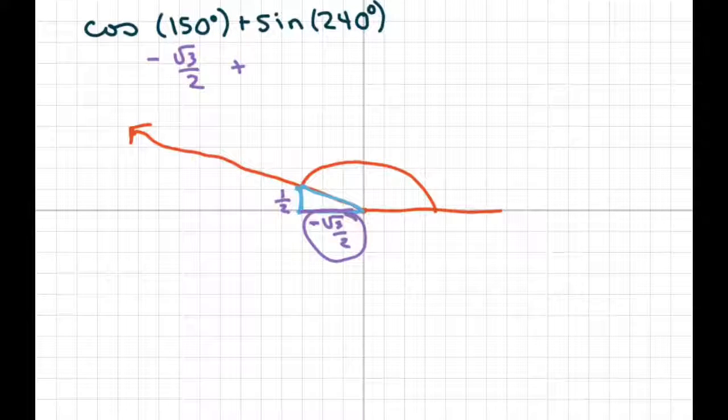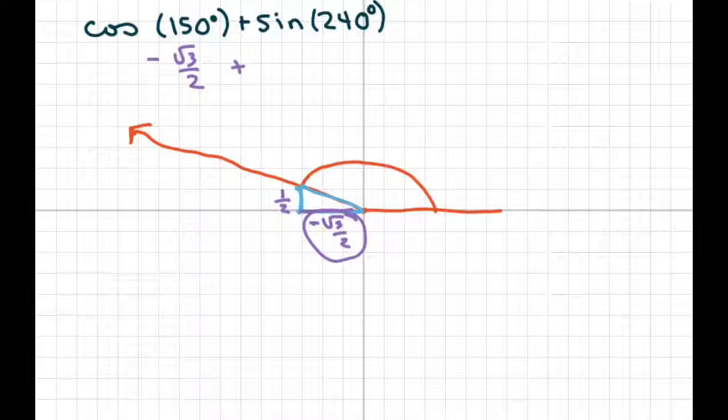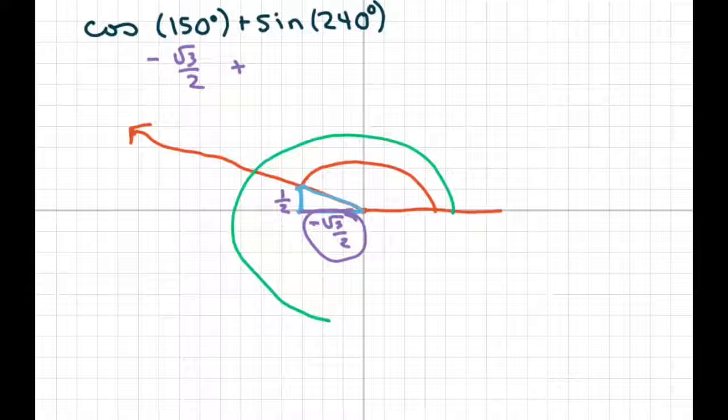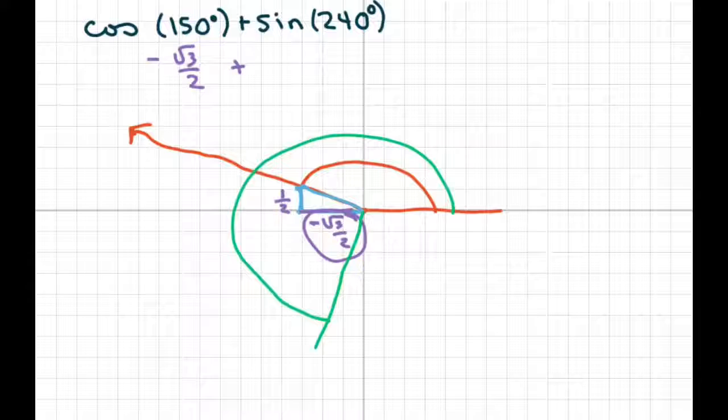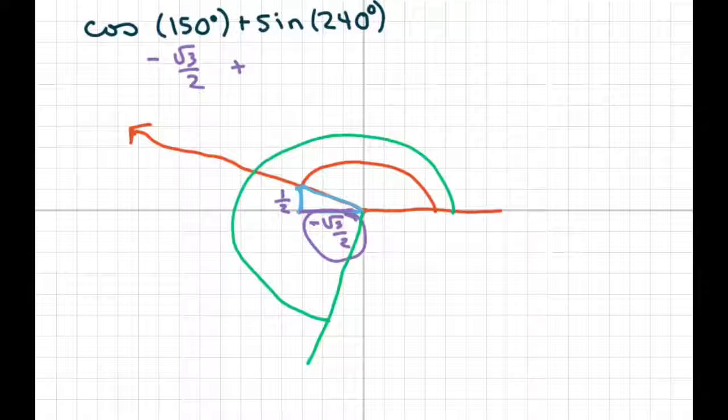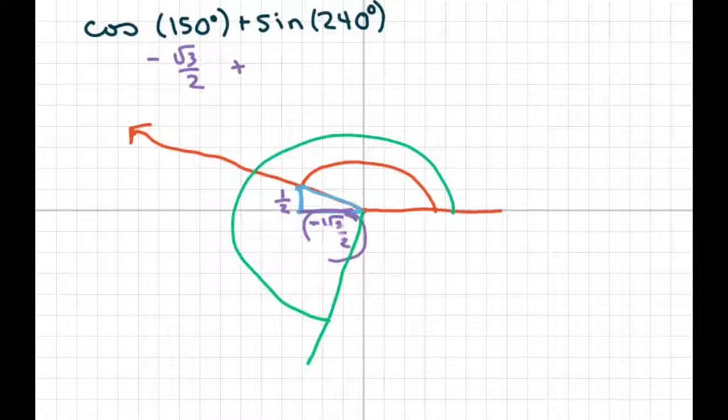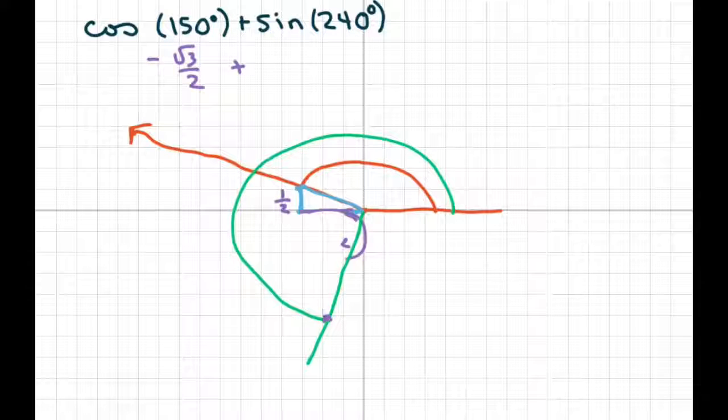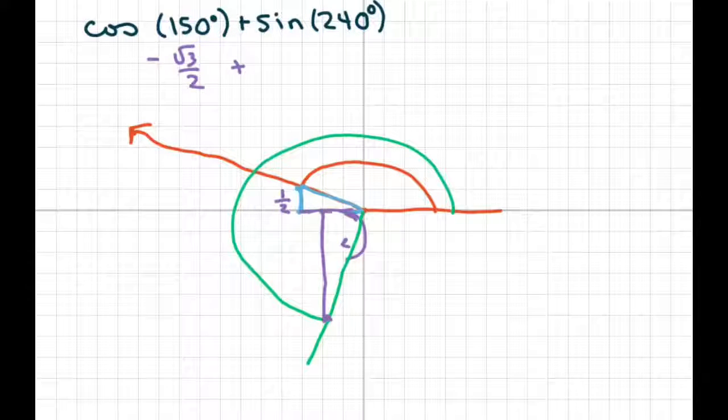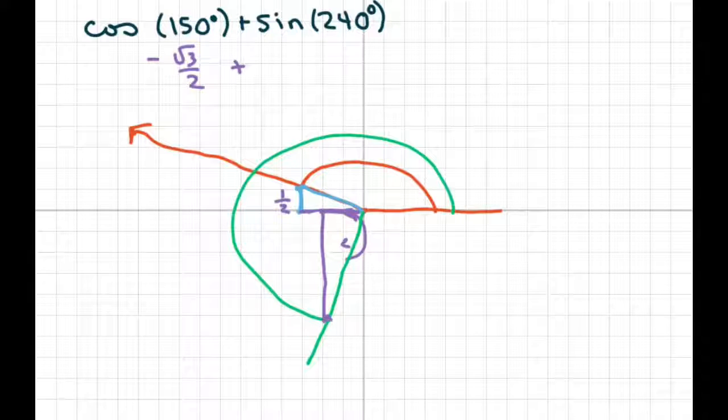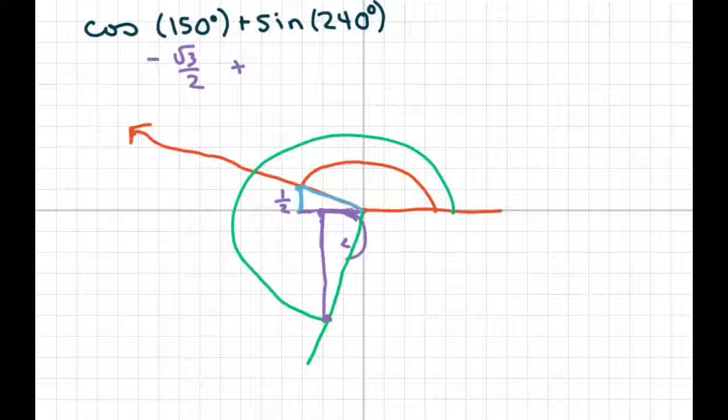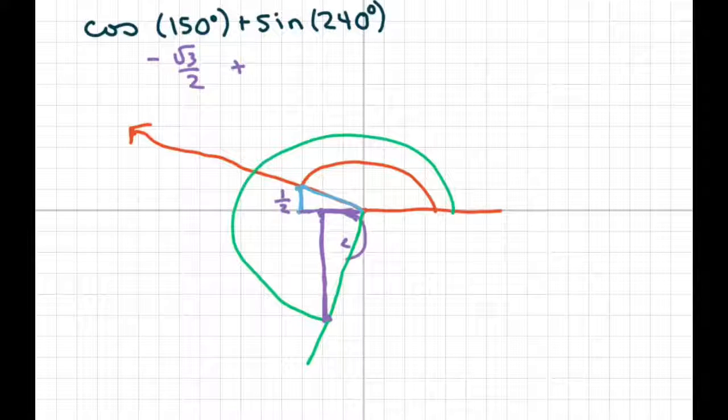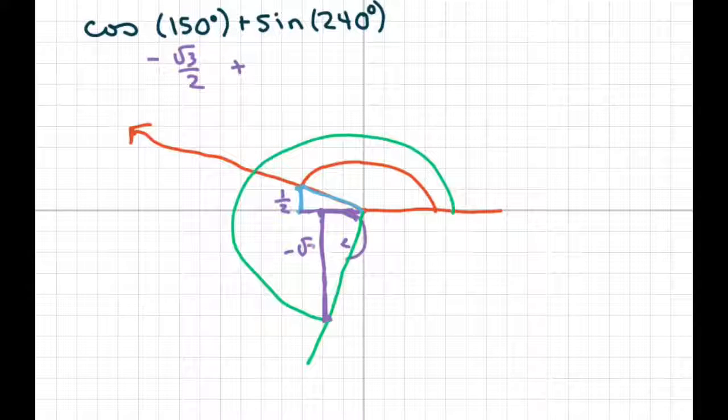Now 240 is 30 shy of 270. So you just go 30 shy of 270 and you draw that. Now we're going to draw the triangle. If I draw a triangle up from here, now I'm looking at this triangle. This is the longer side, which is your y. The longer side is square root of three over two, but since it's in quadrant three, it's negative square root of three over two.